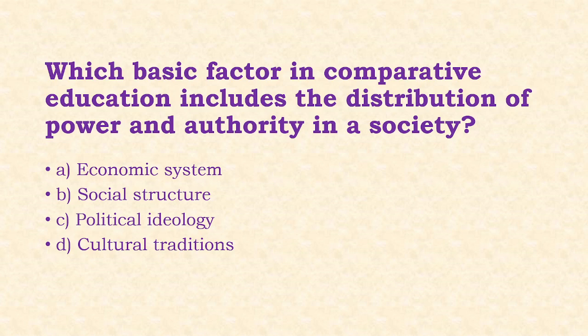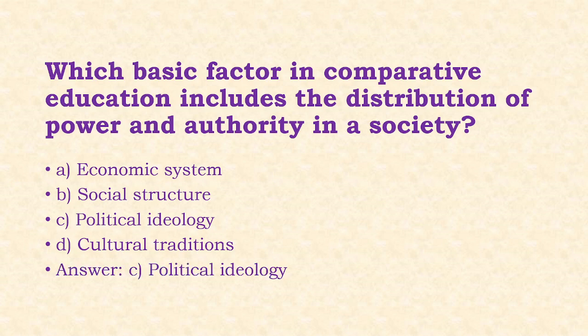Next: Which basic factor in comparative education includes the distribution of power and authority in a society? Options: economic system, social structure, political ideology, cultural traditions. The answer is option C, that is political ideology.